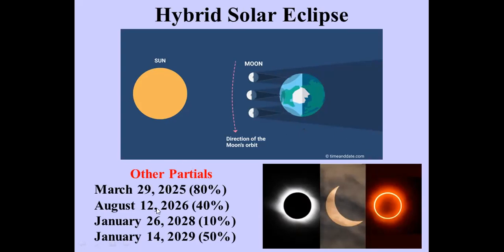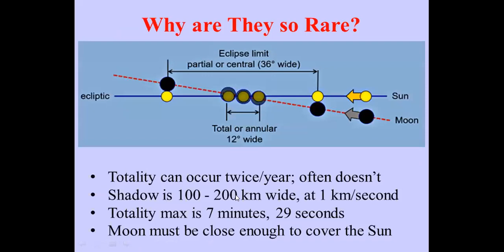Here are the times and dates for the other five partial eclipses coming up this year; we'll also get a partial eclipse next year in March. Total eclipses in any given location are very rare — you're very fortunate here to have seen one in 1972 and to be getting another this year.